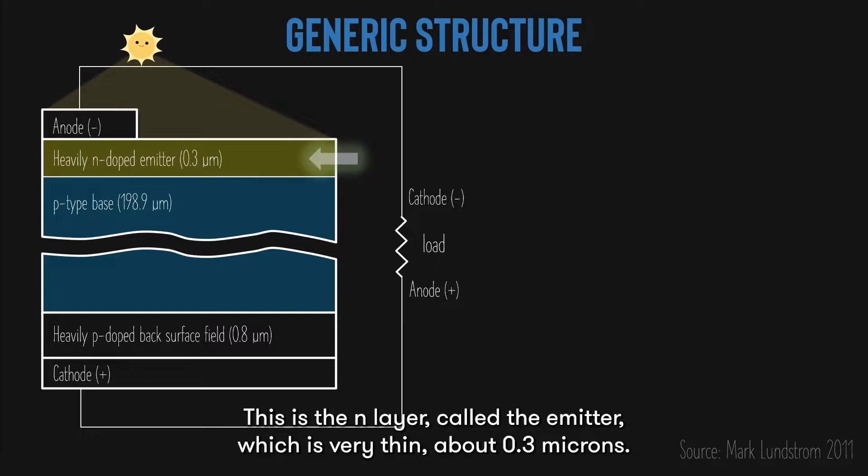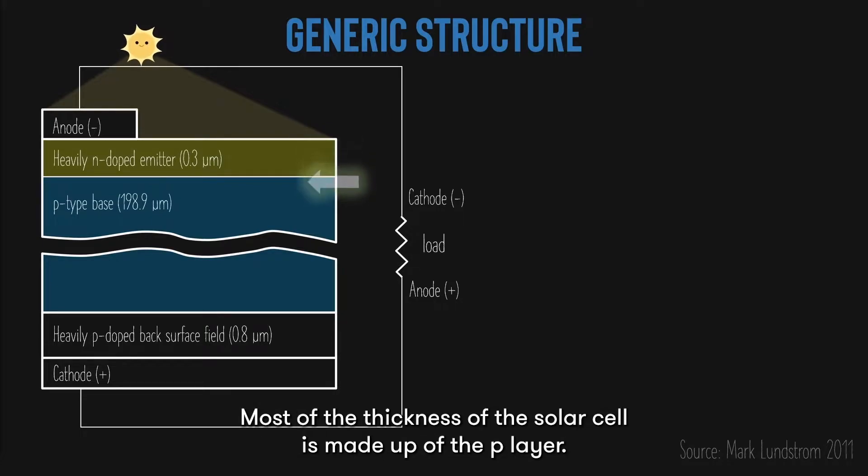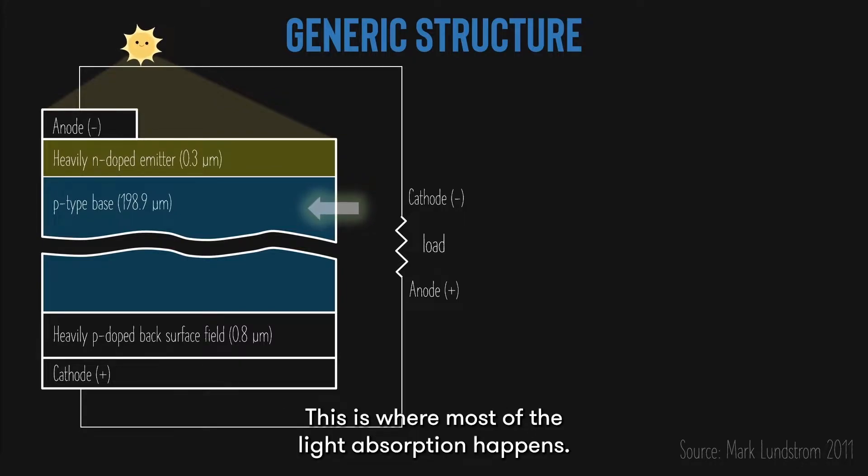This is the N layer, called the emitter, which is very thin, about 0.3 microns. Most of the thickness of the solar cell is made up of the P layer. This is where most of the light absorption happens.